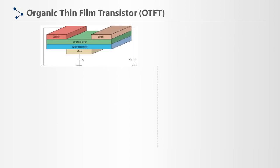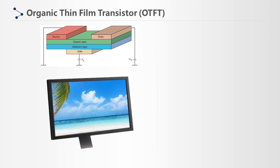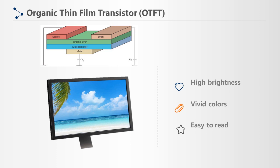Organic thin-film transistor technology involves the use of organic semiconductor compounds, particularly in computer displays. These displays have high brightness, vivid colors, and are easy to read in most ambient lighting environments.